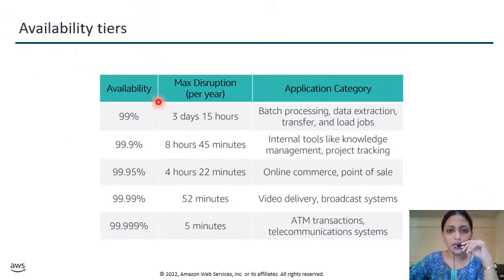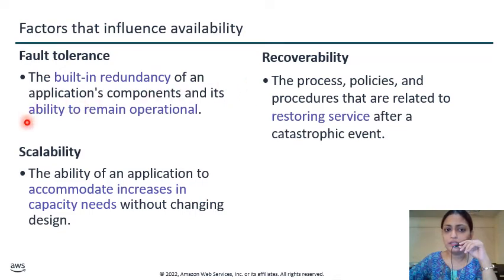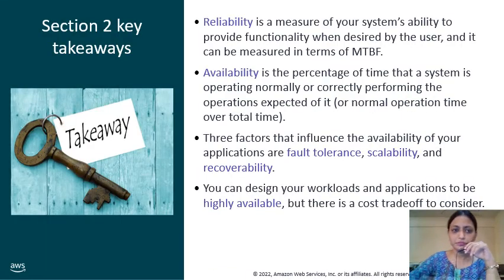Here we have availability tiers shown in a table. There are factors that influence availability: fault tolerance, scalability, and recoverability. Fault tolerance is the built-in redundancy of application components and their ability to remain operational. Scalability is the ability of an application to accommodate increases in capacity needs without changing design. Recoverability is the process, policies, and procedures related to restoring services after catastrophic events.